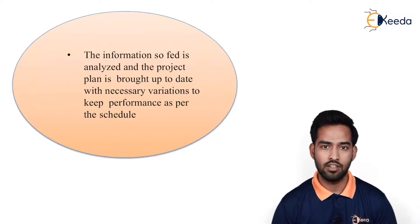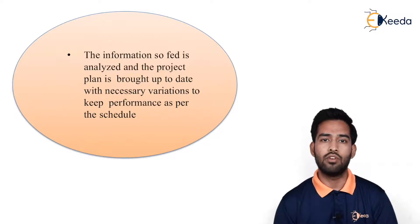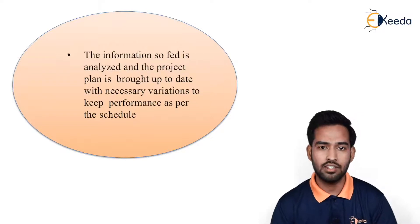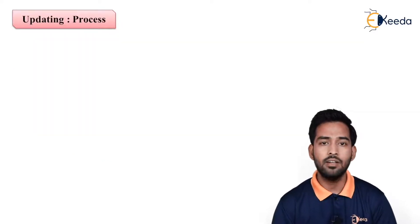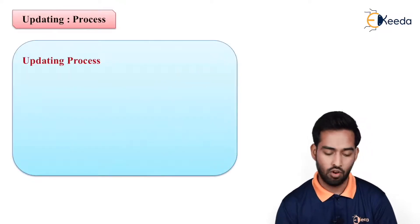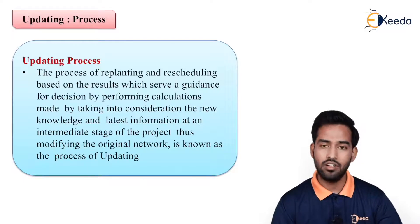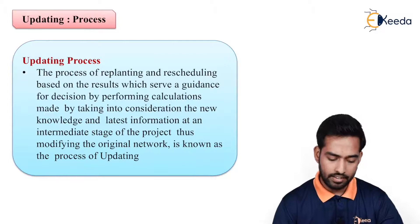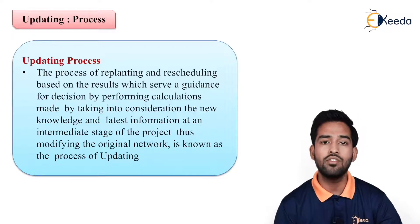For example, if activity B is delayed by 4 days, and the float is not available because that activity is a critical activity, we can increase the number of resources so that the future activity can be taken under control. The main part is the updating process — how we go for updating and what is the process involved. The process of replanning and rescheduling based on results, which serves as guidance for decisions by performing calculations made by taking into consideration new knowledge and latest information at an intermediate stage of the project, thus modifying the original network, is known as the process of updating.